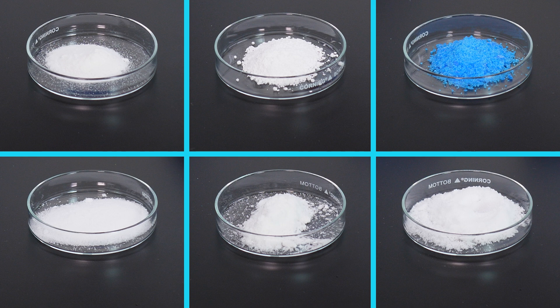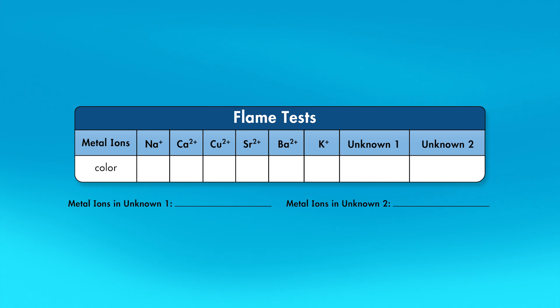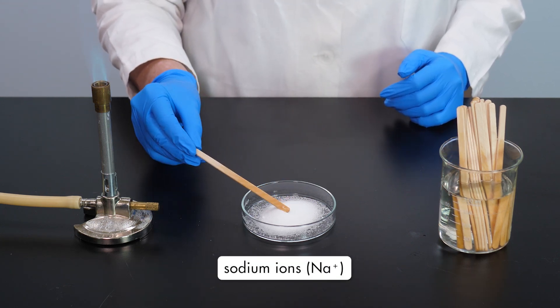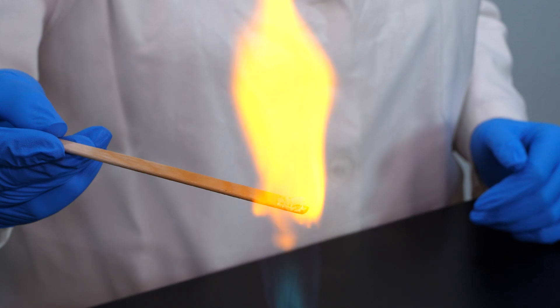We will look at flame tests for six more compounds containing metal ions, then use the data collected to identify two unknown metal compounds by their flame tests. The colors emitted by metal ions during a flame test are often difficult to describe — what appears red to one person might appear pink or orange to another. We will be testing compounds containing metal ions of sodium, calcium, copper, strontium, barium, and potassium. Record the color of each flame test on your table. The first flame test is with a compound containing sodium ions — how would you describe the color of the flame emitted by the sodium ions? Record the results on your table.